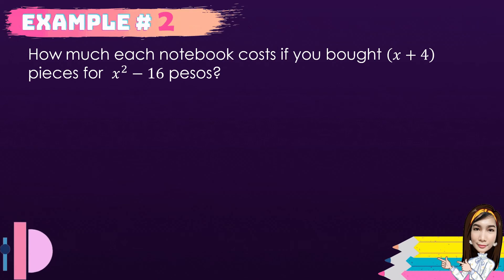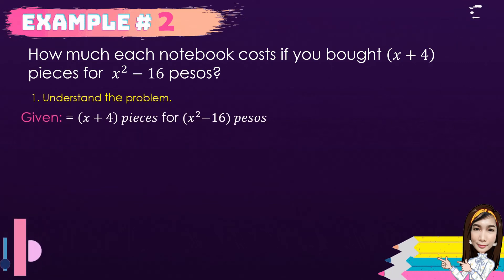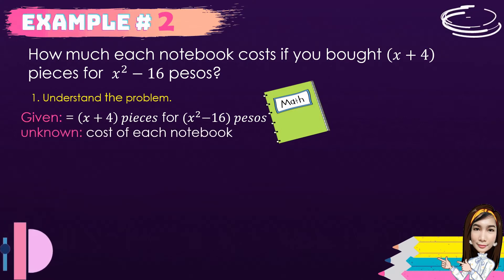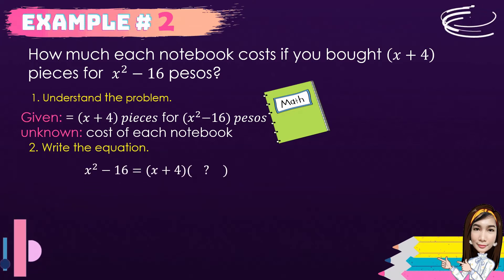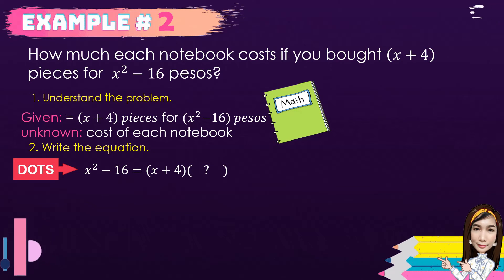For the second example: how much does each notebook cost if you bought (x + 4) pieces for (x² − 16) pesos? First, we analyze and write the given: (x + 4) pieces for (x² − 16) pesos. The unknown is the cost of each notebook. Second, we write the equation: x² − 16 equals (x + 4) times the cost of each notebook. The expression x² − 16 is the difference of two squares.